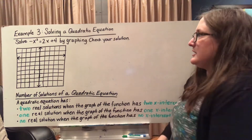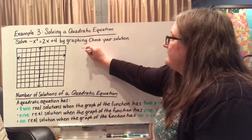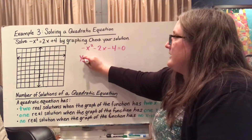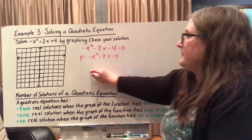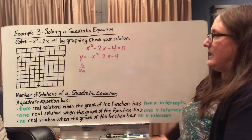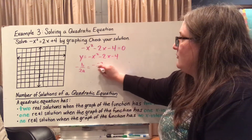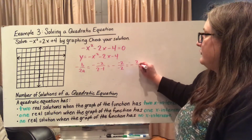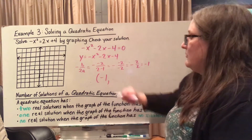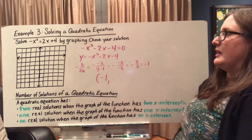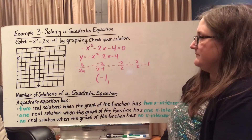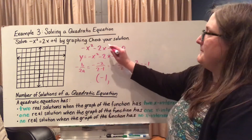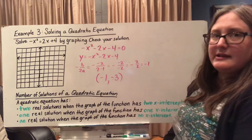Here I have -x² = 2x + 4. I'm going to rewrite this as -x² - 2x - 4 = 0. Now my related equation is y = -x² - 2x - 4. I'm going to find the vertex using negative b over 2a: -(-2) over 2(-1) gives me negative 2 over 2, or negative 1. So my vertex x-coordinate is -1. Plugging in: -(-1)² - 2(-1) - 4 = -1 + 2 - 4 = -3. So my vertex is at (-1, -3).